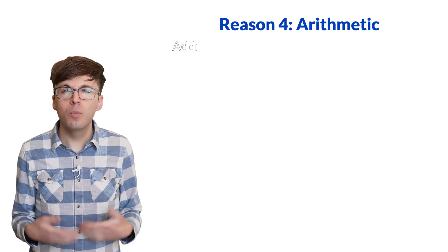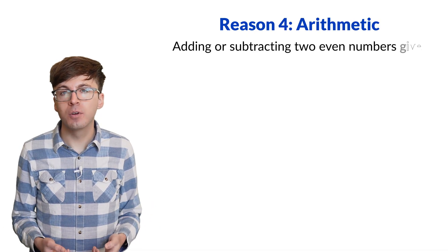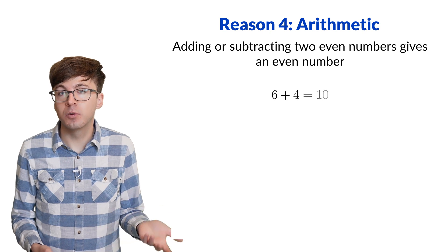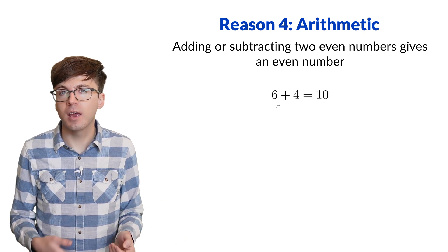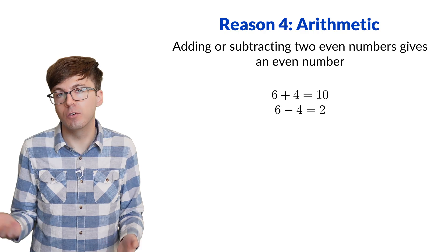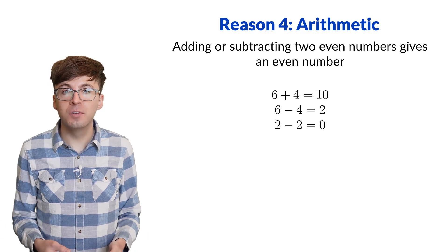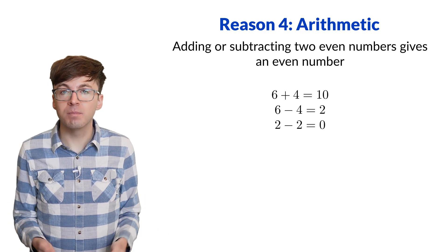Reason 4. When we add or subtract two even numbers, we always get an even number. Like 6 plus 4 is 10, which is even. And 6 minus 4 is 2, which is even. Since 2 minus 2 is 0, 0 should be even.